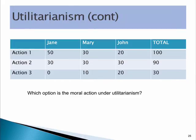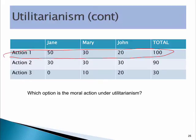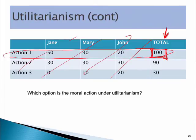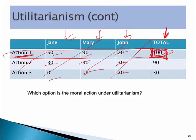Now have a look at this particular table: which option is the most moral, or which is the ethical action, taking a utilitarian analysis? Hopefully you can see it's clearly option one. How do I know that? I don't even need to look at the individual-level calculations — I just go to the total utility: 100. That beats 90 and 30, so it's got to be action one. I'm not worried about how many people are affected; I'm only looking at this total number.